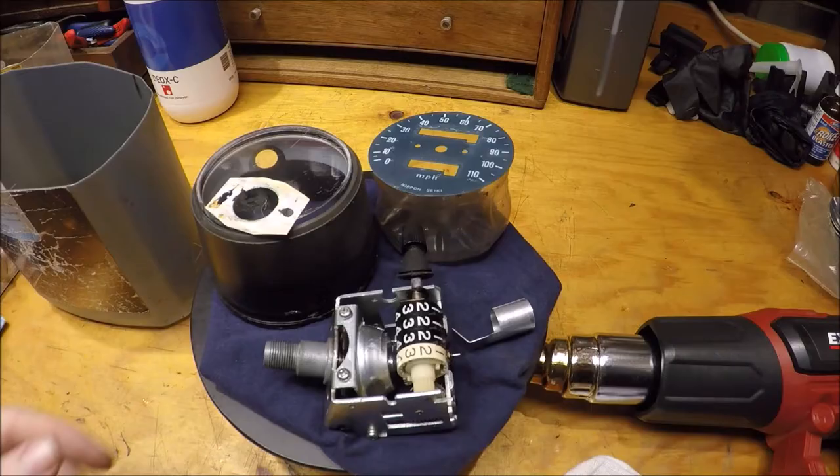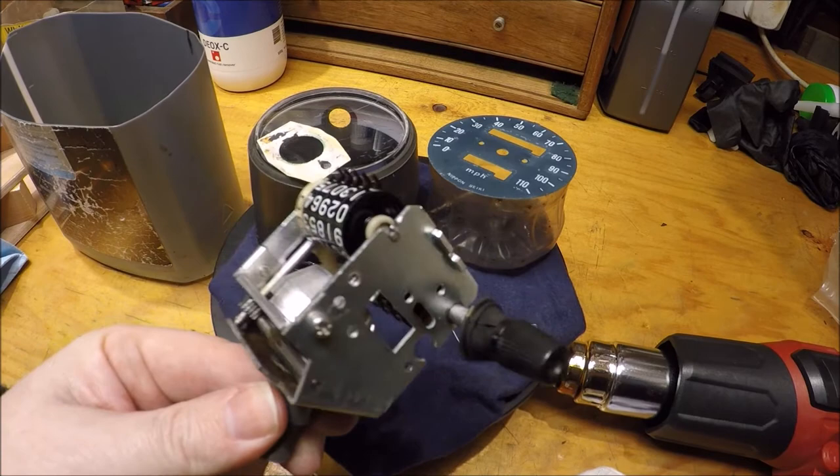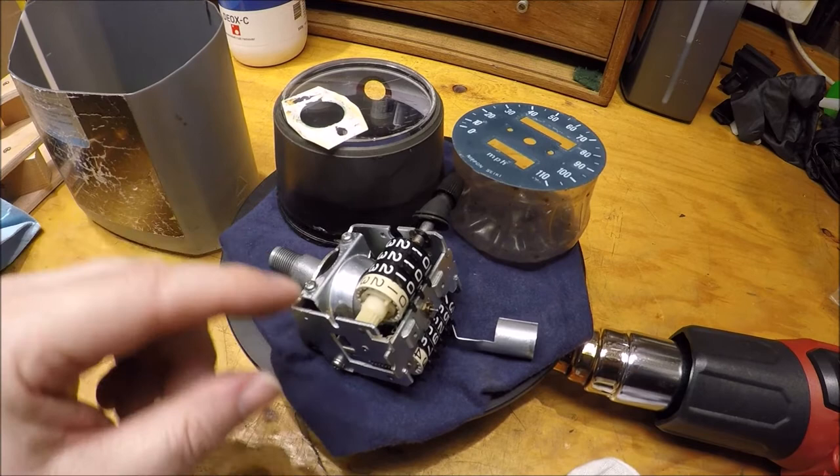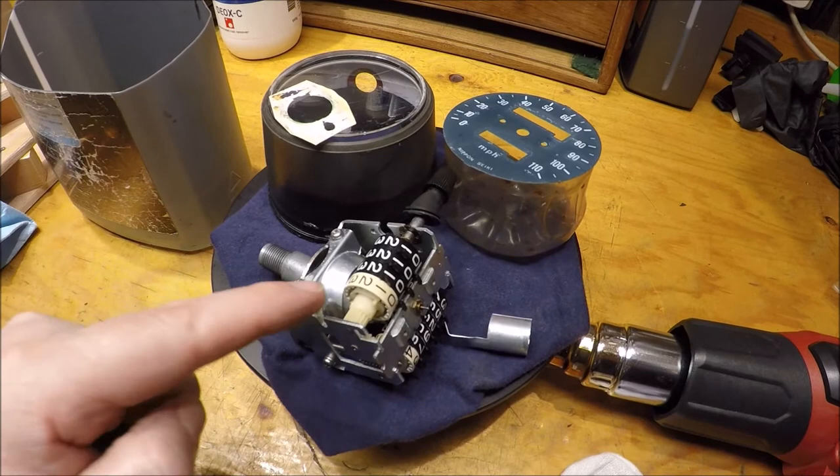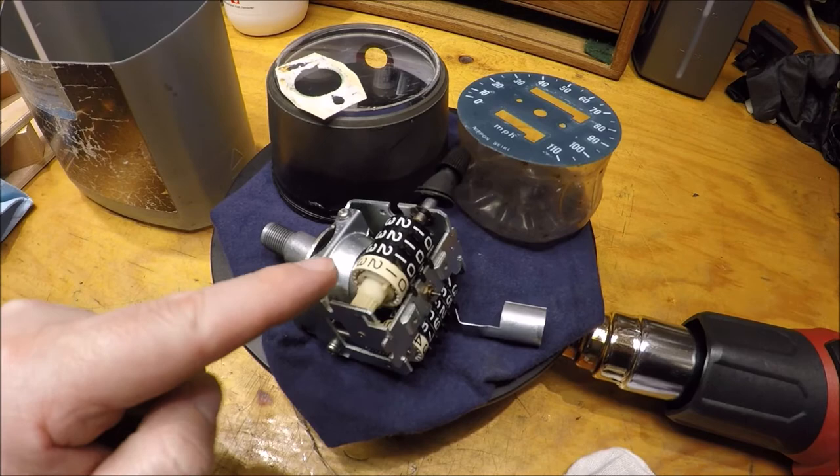I've got the main unit all back together again, all cleaned and lubricated. One thing I've learned from this is that hydrogen peroxide, white spirit, lubricant, water and these numberings, particularly on the white, start to run. If you're doing this, try not to get the numbering or lettering wet with anything.